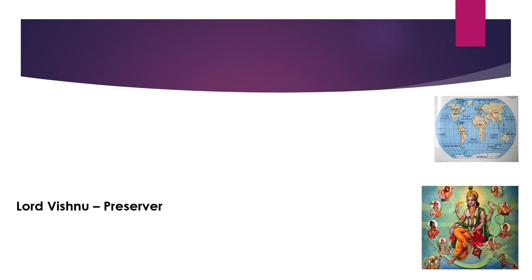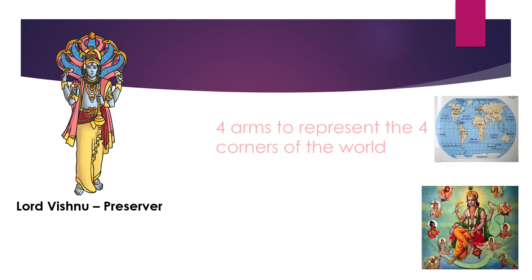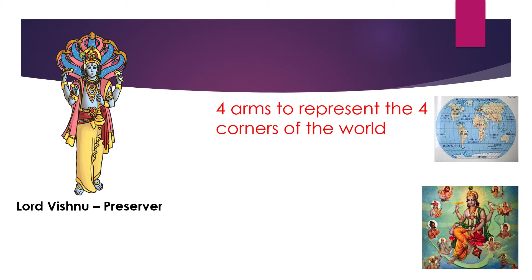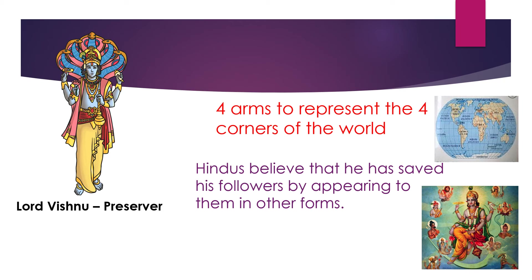The second person is Lord Vishnu, and Lord Vishnu is the preserver. He keeps everything well, everything clean, looks after everything, and takes care of everything. He has four arms to represent the four corners of the world. Hindus believe that he has saved his followers by appearing to them in other forms — a little bit like a shapeshifter. I'm going to read a story about Lord Vishnu in the next couple of weeks.